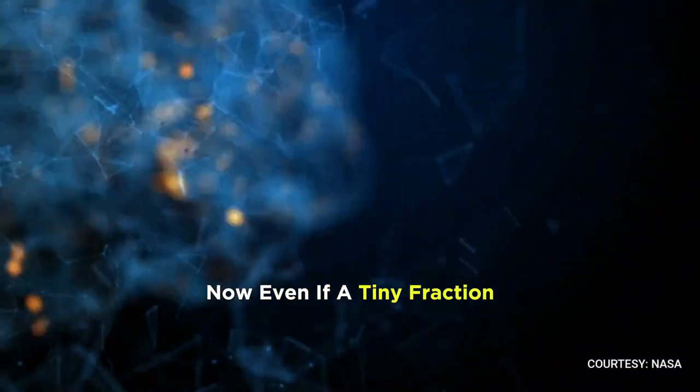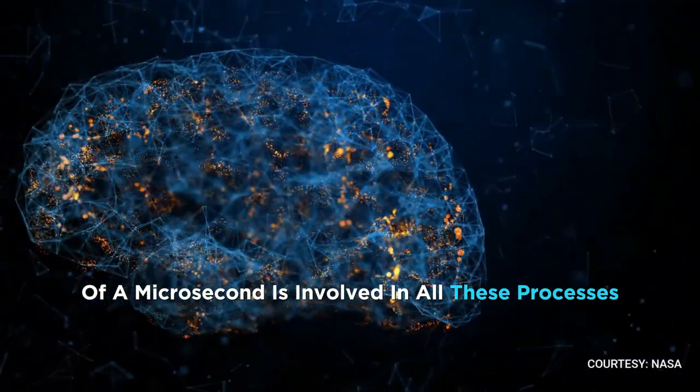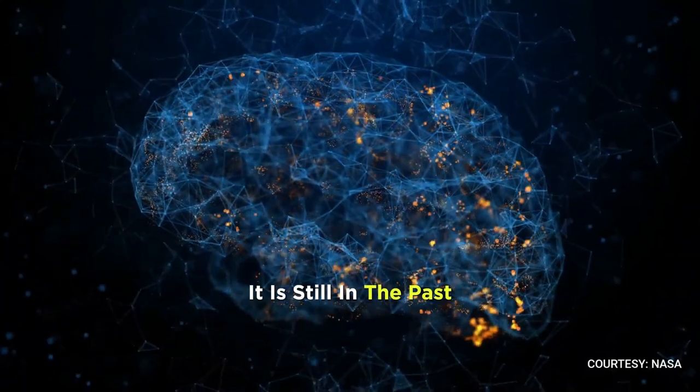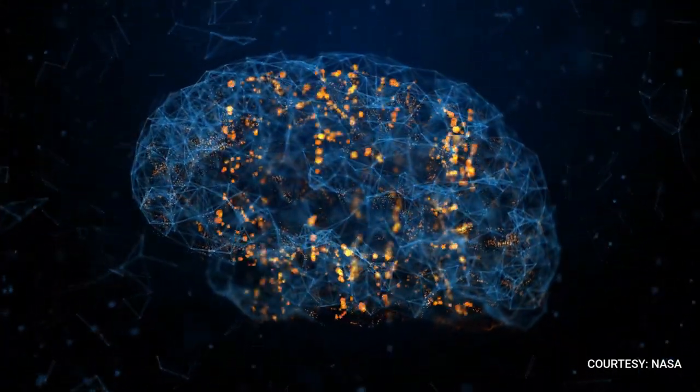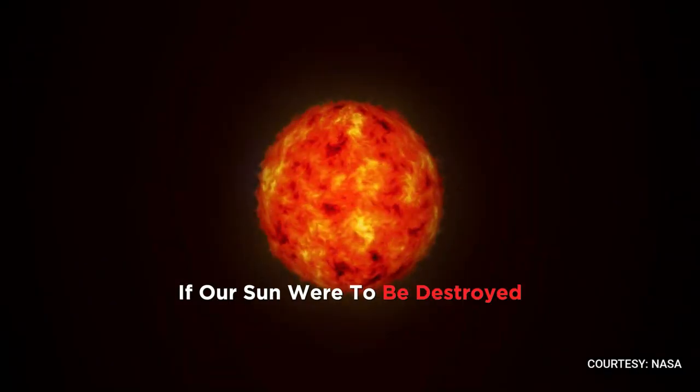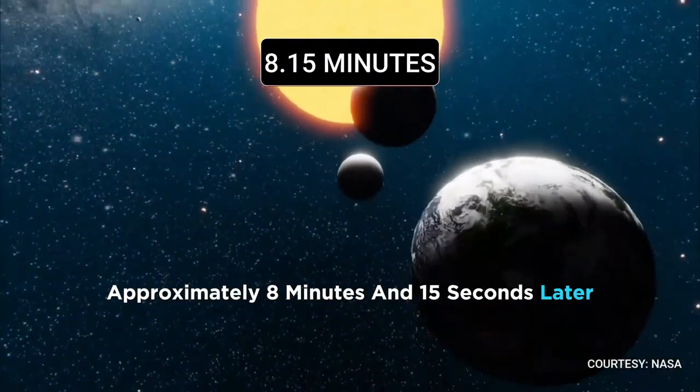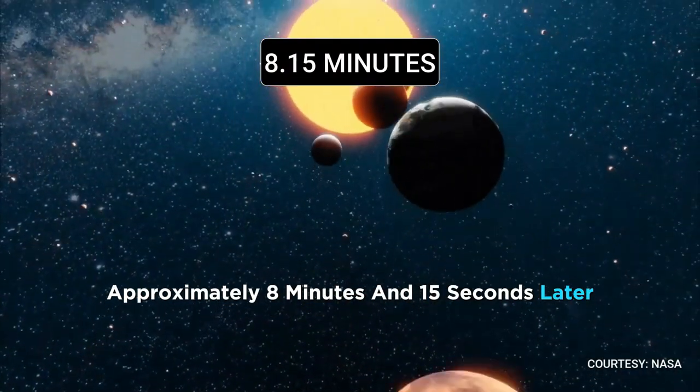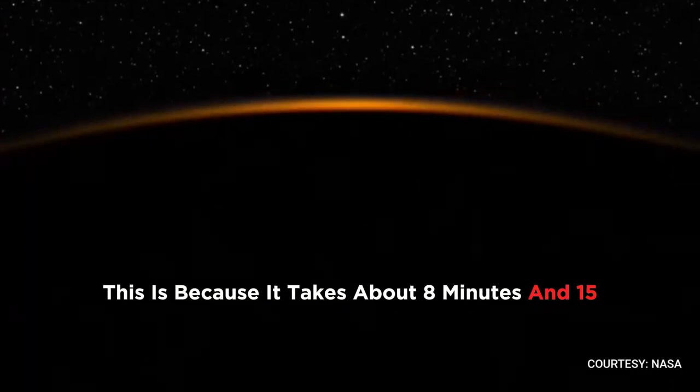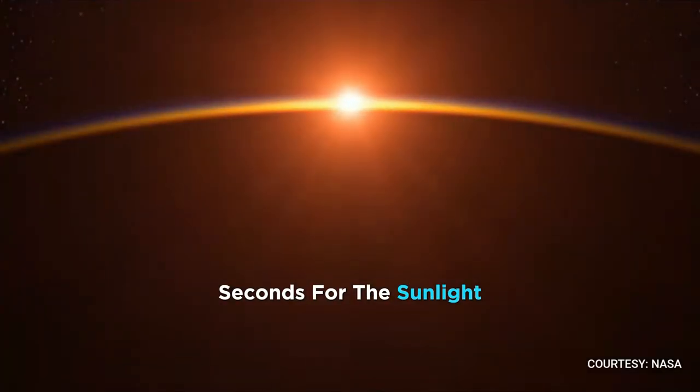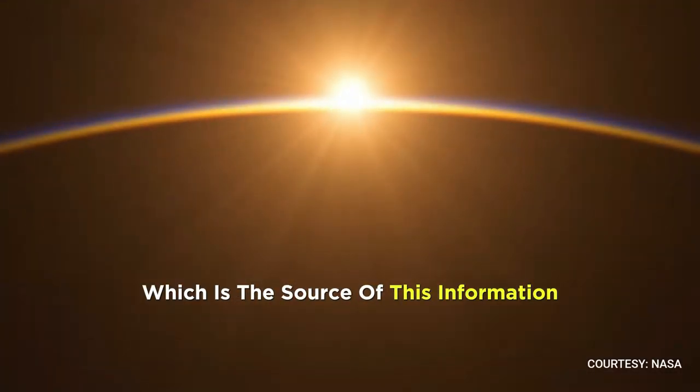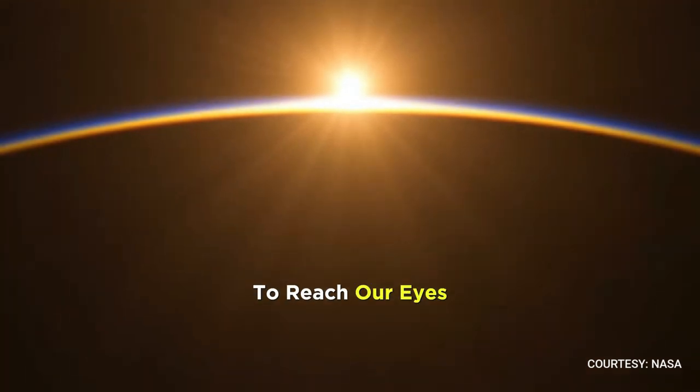Now, even if a tiny fraction of a microsecond is involved in all these processes, it is still in the past. That's why it is said that if our sun were to be destroyed, we would find out about it on Earth approximately 8 minutes and 15 seconds later. This is because it takes about 8 minutes and 15 seconds for the sunlight, which is the source of this information, to reach our eyes.